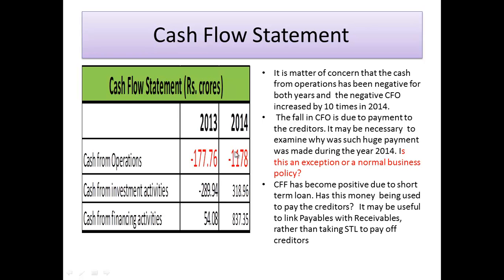The negative CFO is due to two factors: credit sales and huge payments to creditors. Regarding cash from financing, CFF is positive in 2014, and there is a visible link between CFF and CFO. It appears that the large creditor payments were funded by short-term loans, making CFF positive. Whether this money was specifically used to pay creditors is worth examining — the link between short-term loans and negative cash flow from operations needs investigation.